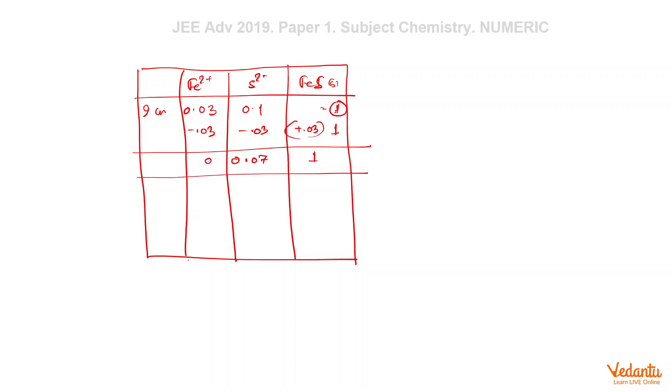So we will start our problem solving from here. And now let us take it back. So if we do it minus X here, here it will plus X and let us do plus X. And so at equilibrium, we can say that the concentration of Fe²⁺ is X. Concentration of S²⁻ is 0.07 plus X and this is still 1 because this is solid.